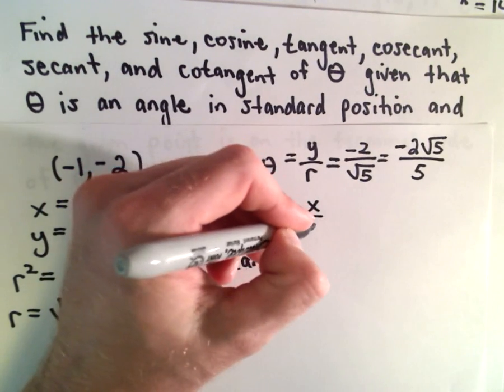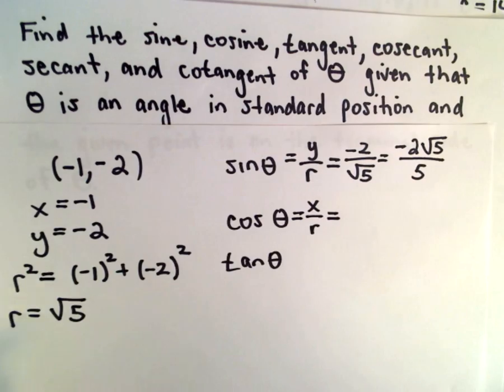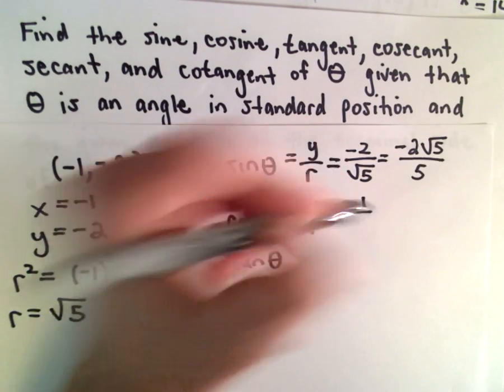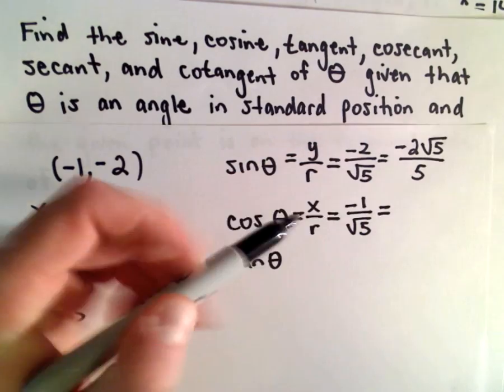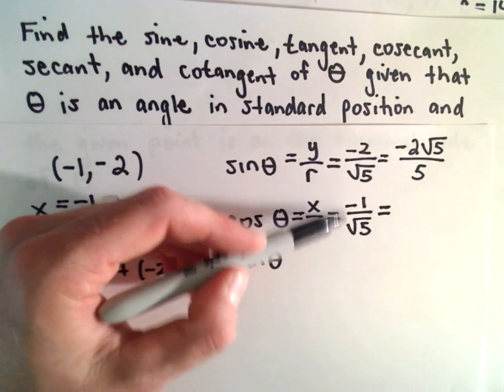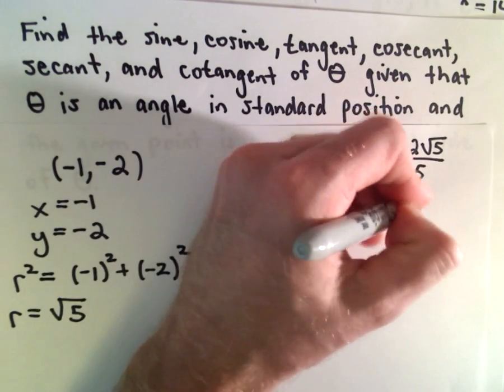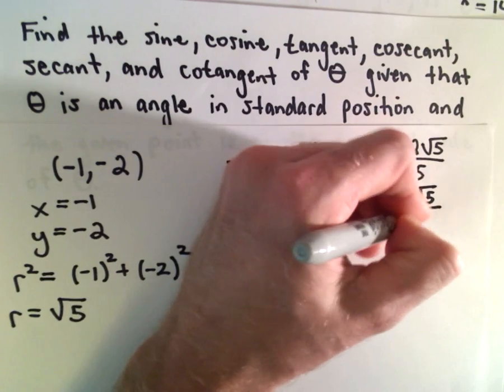Cosine of theta is going to be x divided by r. So x in this case is negative 1, r is the square root of 5. Multiply numerator and denominator by the square root of 5. We'll get negative square root of 5 divided by 5.